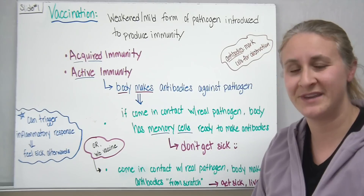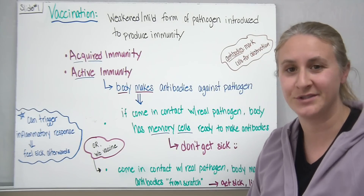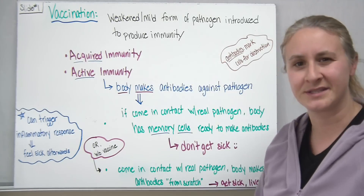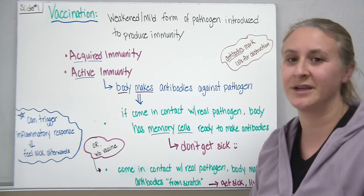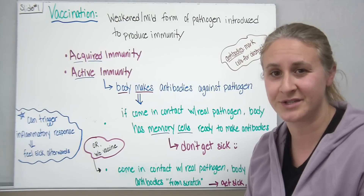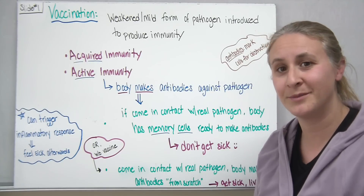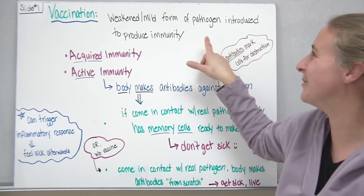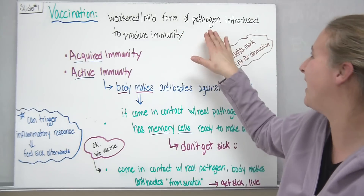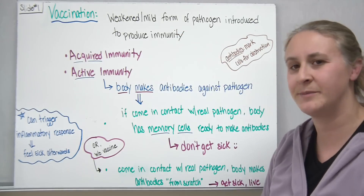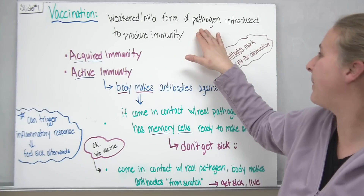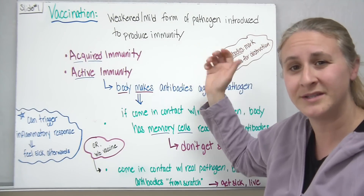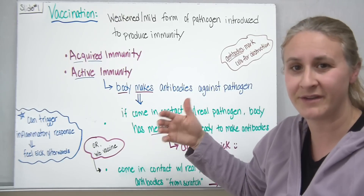Many of us have heard the term vaccinations, which people tend to call 'shots,' but a lot of us don't necessarily know how vaccinations work. A vaccination is really just a weakened or mild form of a pathogen that gets introduced into the body to produce immunity. Remember, a pathogen is any organism that can cause harm — it's not one specific organism like a virus or bacteria, but a generic term.